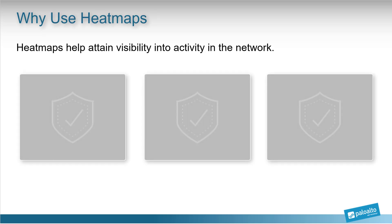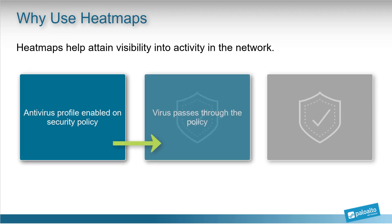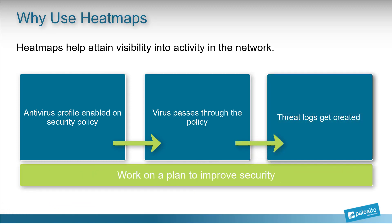Heatmaps help us attain visibility into what is happening in the network. Let's say we have an antivirus profile enabled on a security policy. If a virus passes through the policy, a threat log is created whether it is permitted or blocked. Once we get visibility into what is happening in the network, we can work on improving the security.